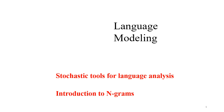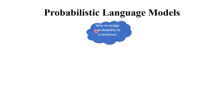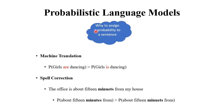Language modeling is one of the important tasks in natural language processing. Our goal is to assign probabilistic values to sentences. Why assign probability to a sentence? Two key examples are machine translation and spell correction.